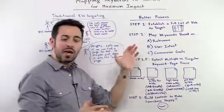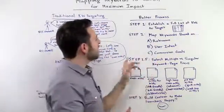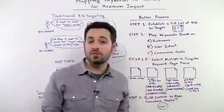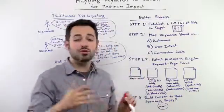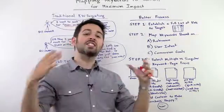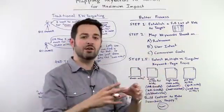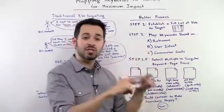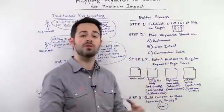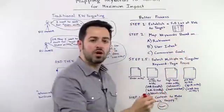Over here, we have a better process. No Frankenpages. Step one, establish the full list of keywords. So rather than going one by one and saying, oh, we want to target this, we want to target that, let's build out the entire list of keywords we want to target and build out a whole keyword list. So we've got our full list of keywords to target.